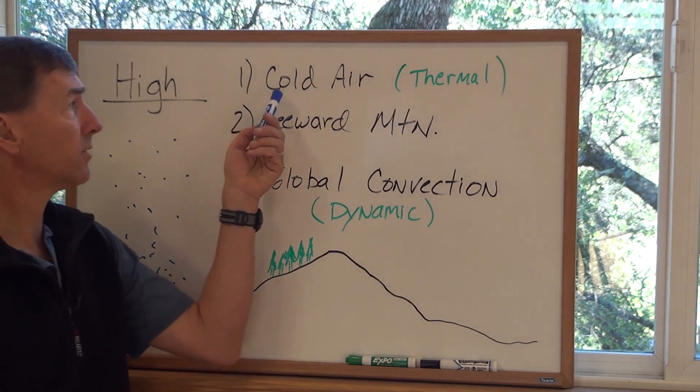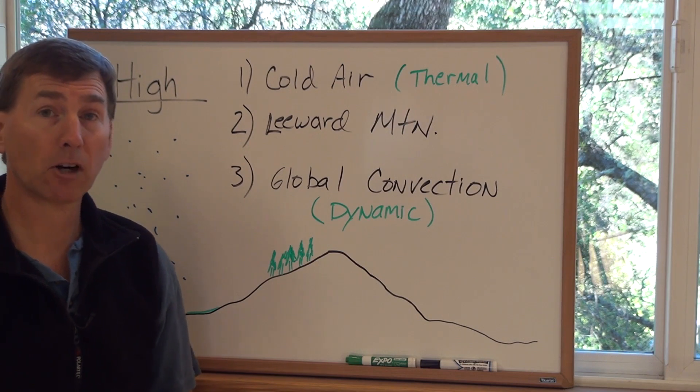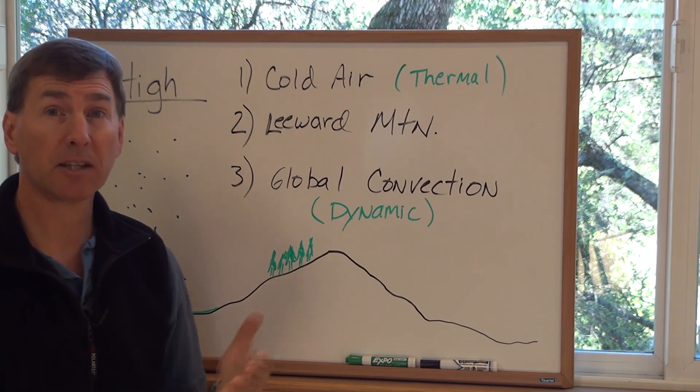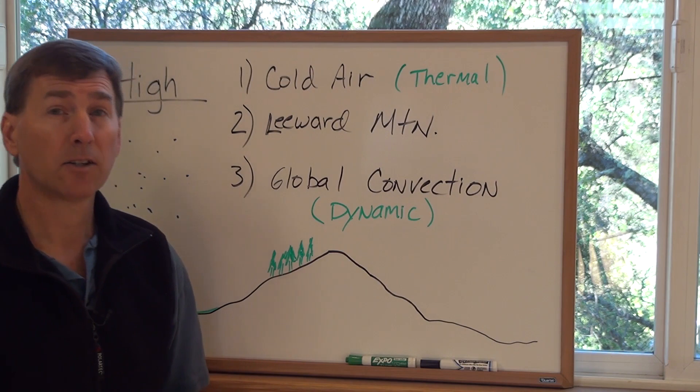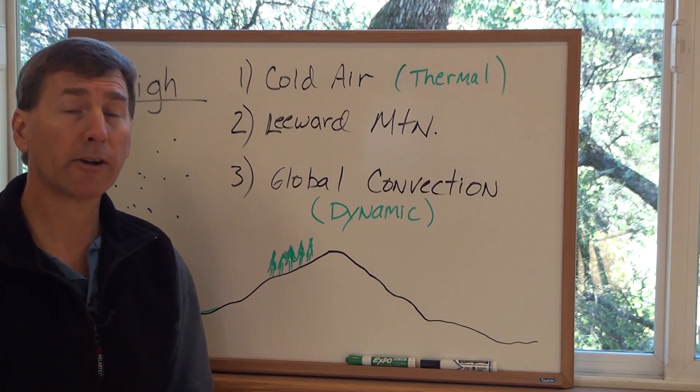Number one, you could have simply cold air. For example, in the Arctic or Antarctic, maybe in the continental areas of the United States and Canada and the continental areas of Europe and Russia. It's very cold there in the winter time.